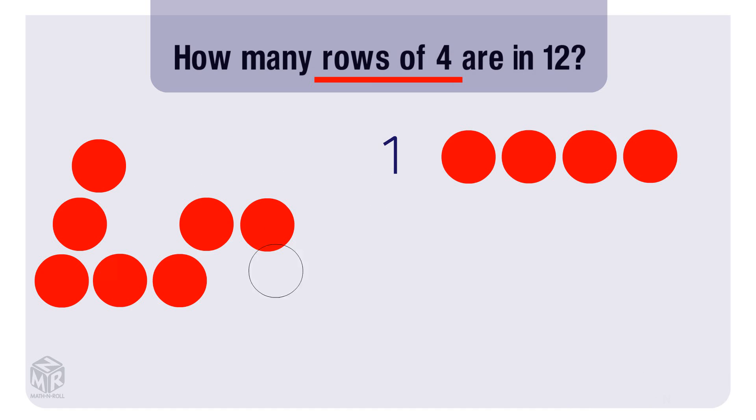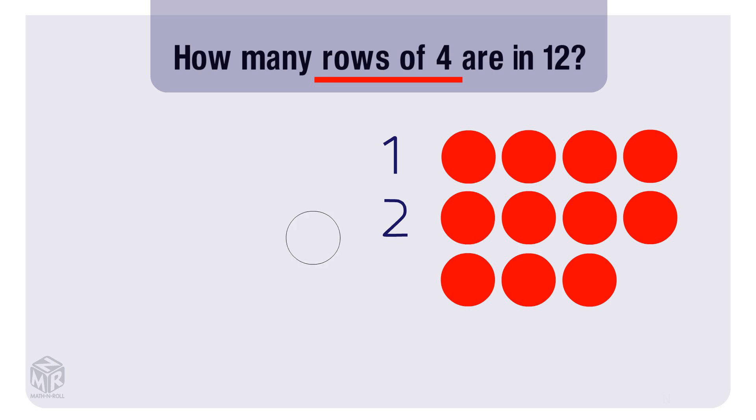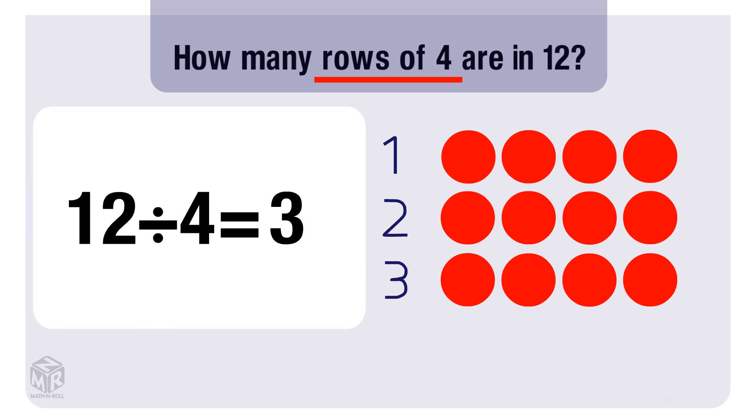Here is the first row with 4 counters. Now we have 2 rows of 4. And finally, we have 3 rows of 4. We have no more counters, so 12 divided by 4 equals 3.